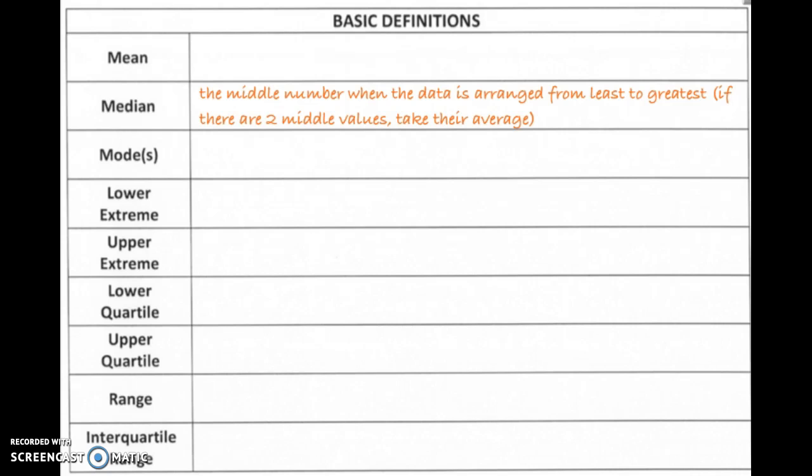The median is the middle number when the data is arranged from least to greatest. Super important that you put it least to greatest. If there are two numbers in the middle, two middle values, then you take their average, the number that's halfway in between will give you the median.